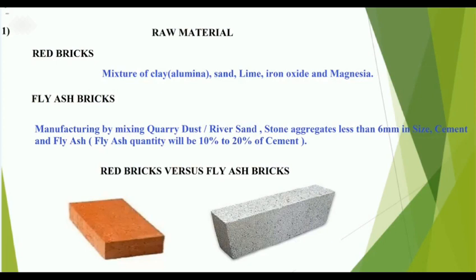On the basis of raw material: red bricks are a mixture of clay, aluminum, silica, lime, iron oxide, and magnesia. Fly ash bricks are manufactured by mixing quarry dust, river sand, stone aggregate less than 6mm in size, cement, and fly ash — with fly ash quantity being 10 to 20 percent of cement.